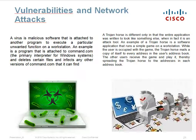Vulnerabilities and network attacks: a virus is malicious software attached to another program to execute an unwanted function on a workstation — for example, a program attached to command.com, the primary interpreter for Windows, that infects other versions of command.com. A Trojan horse is different in that the entire application is designed to look like something else when in fact it is an attack tool. An example is a game application that, while the user plays it, mails a copy of itself to every address in the user's address book, thereby spreading the Trojan horse.